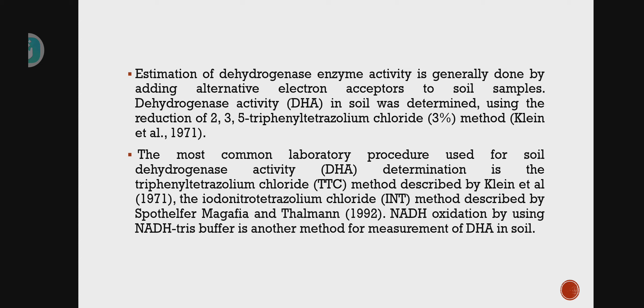The first electron acceptor is 2-3-5-triphenyl tetrazolium chloride (TTC). The second one is INT — iodo-nitro-tetrazolium chloride. The third one is NADH oxidation using NADH tris buffer. So there are three alternative electron acceptors.